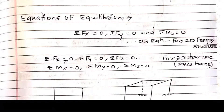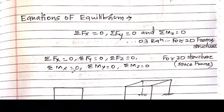But if you are considering a 3D structure, there are 6 equations: summation Fx = 0, Fy = 0, Fz = 0, and Mx = 0, My = 0, and Mz = 0. So there will be 6 equations for a 3D structure or space frame.